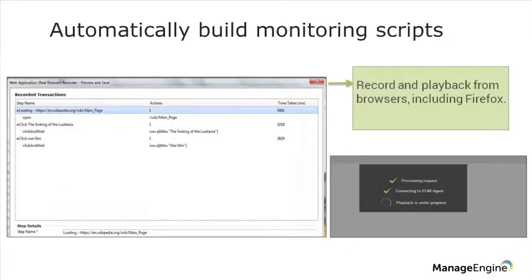The real browser monitor automatically builds monitoring scripts. Apart from the end user monitoring agent, it requires a recorder tool to be installed — similar to the recorder tool we saw with the URL sequence monitor. When you navigate across different pages — for example, a transaction that involves logging in, clicking on two links, and then logging out — this four-step interaction is captured with the help of the recorder. Not only that, the real browser monitor automatically builds a record-and-playback script. So any time you poll the monitor, the transaction runs in the background and the recent performance data gets populated.